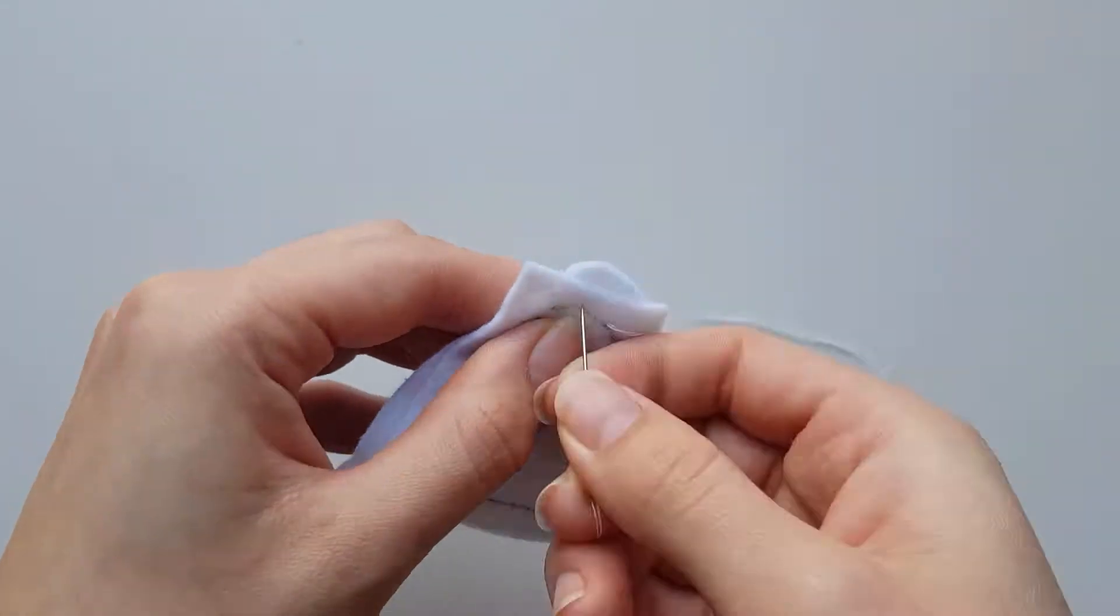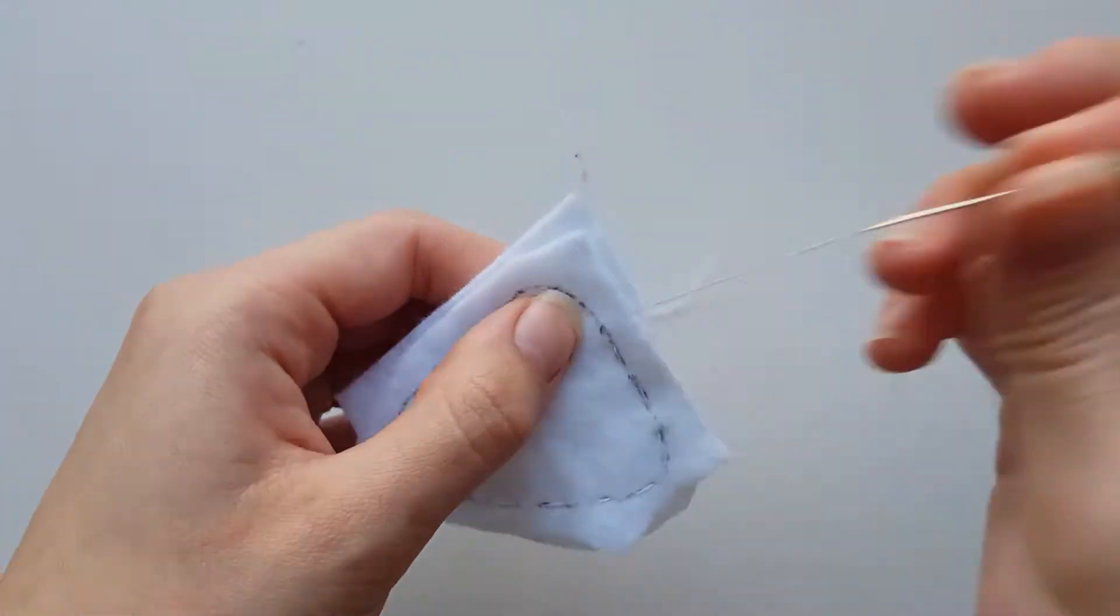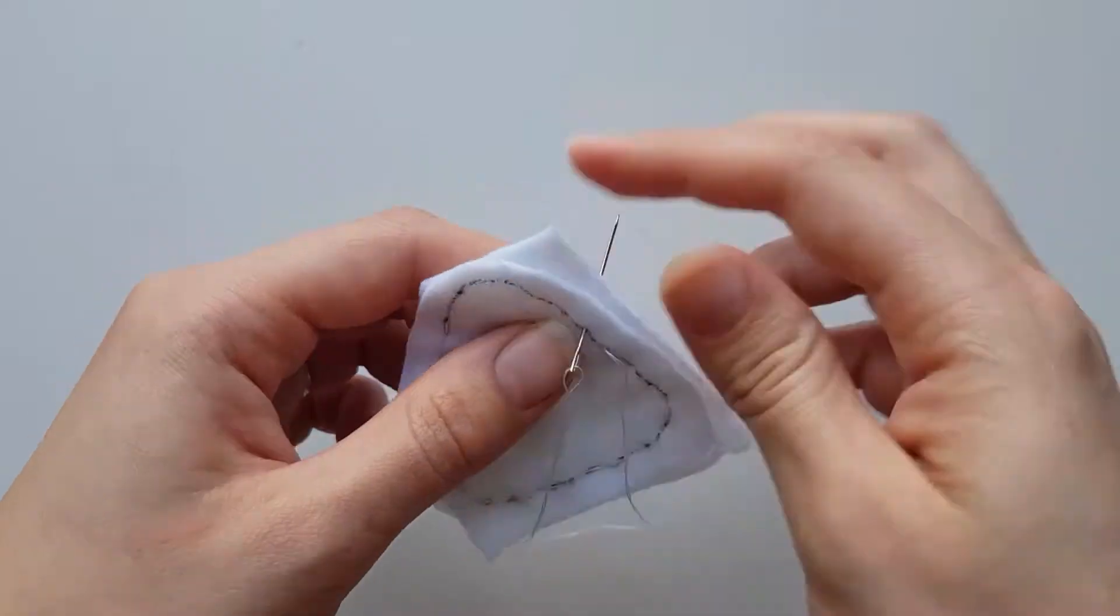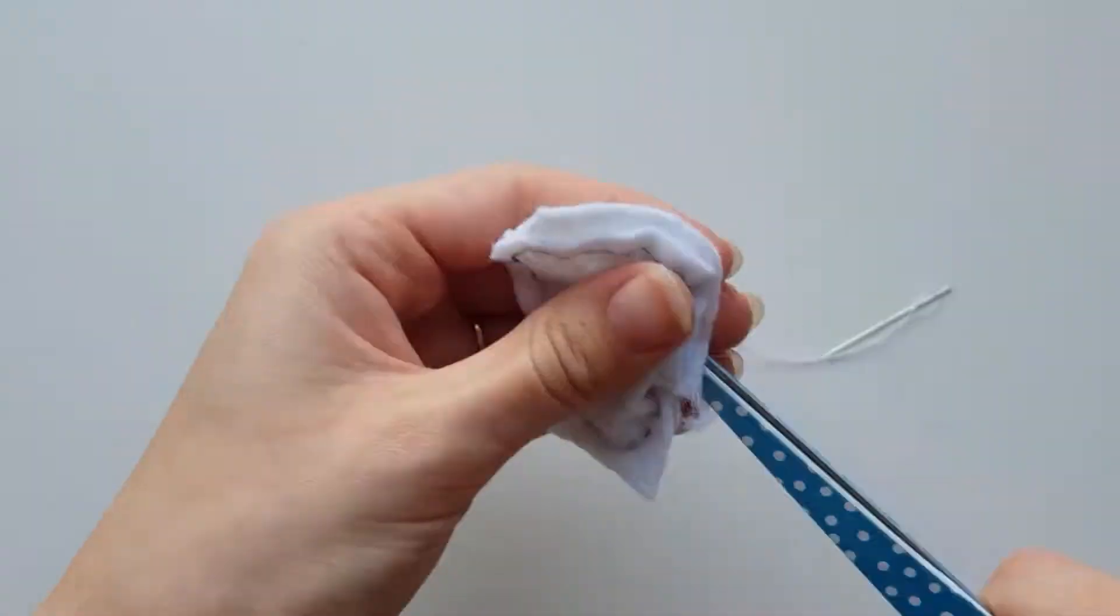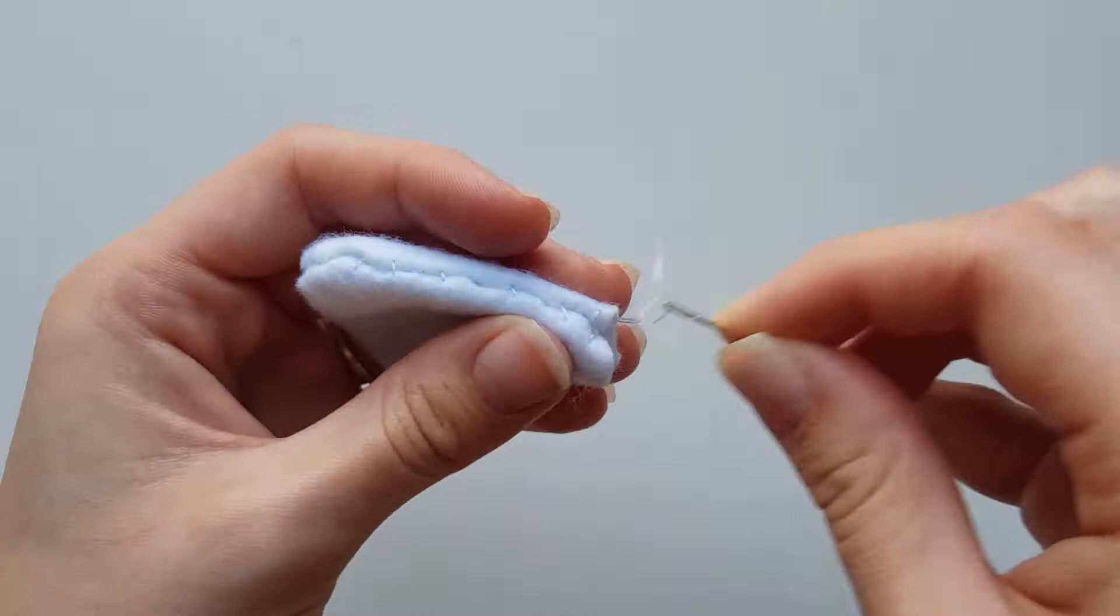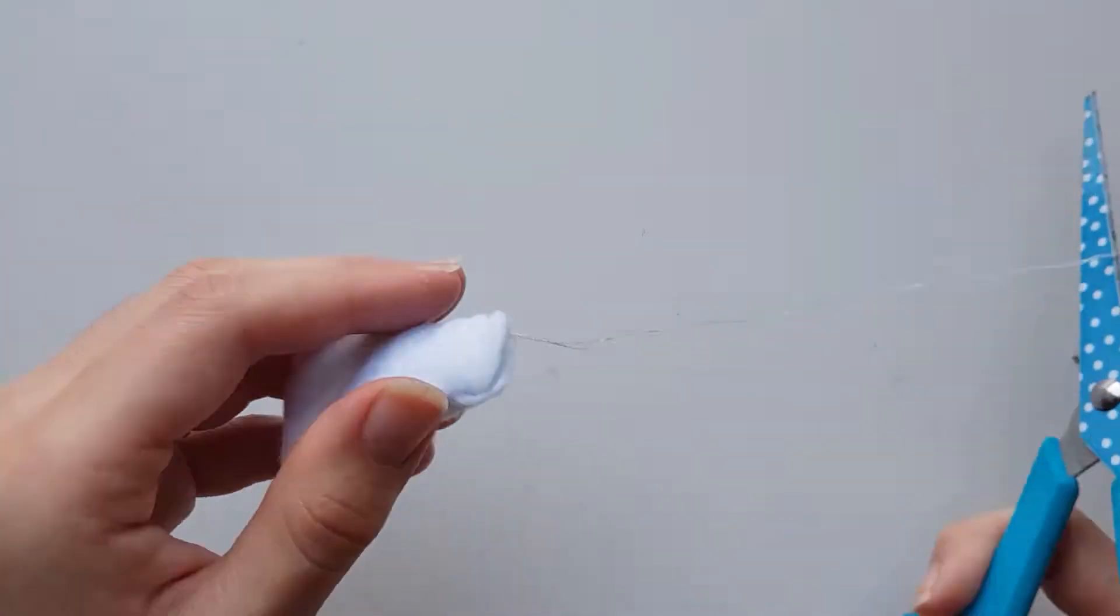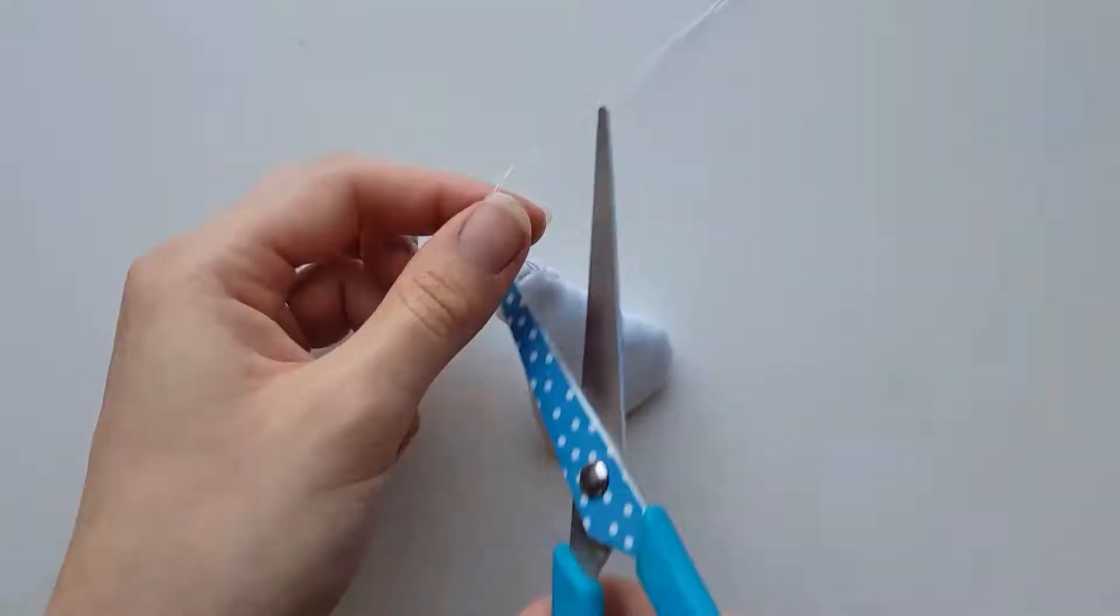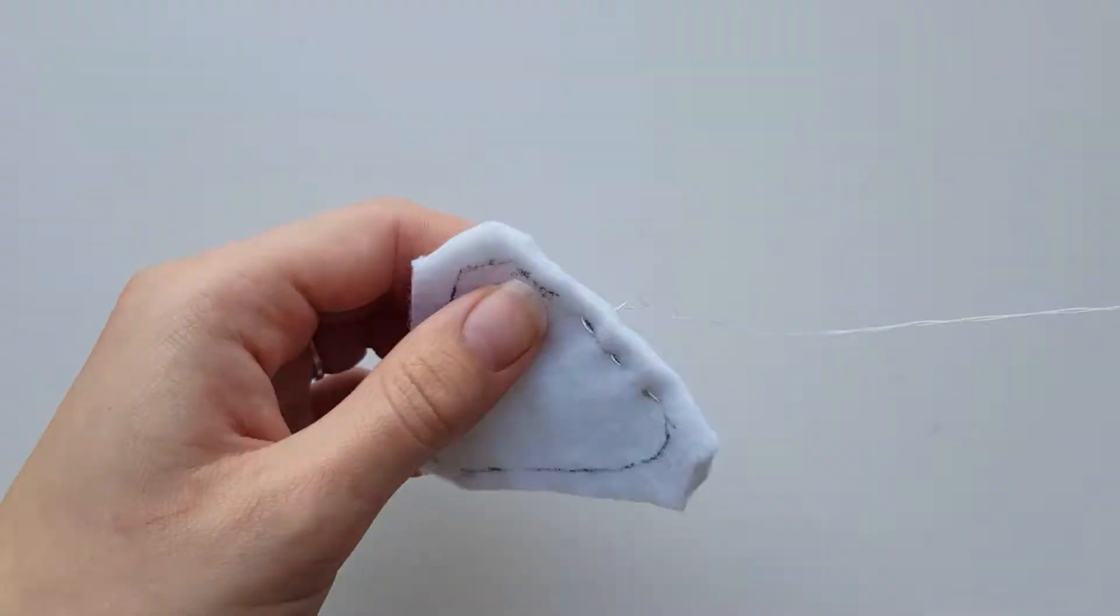The first thing you need to do is place two of the small wing pieces together with the tracing on the outside and begin sewing along the tracing line starting from just above the inner corner. When you've almost reached the end of the line flip it the right way up and leave the tip of the wings open. Once done repeat this for the remaining two pieces.